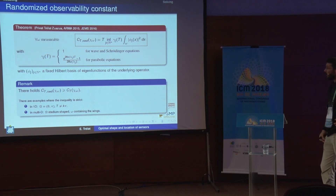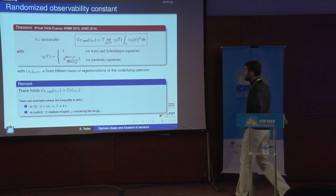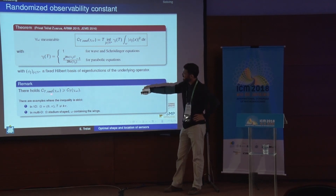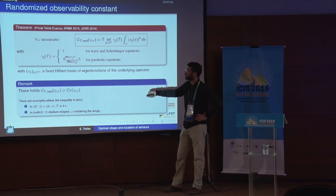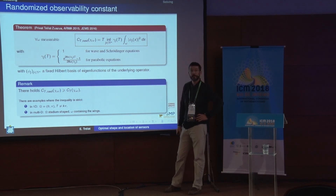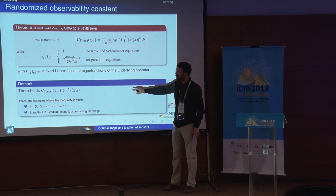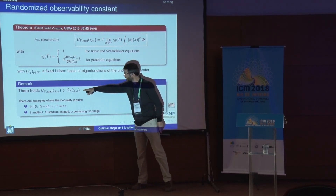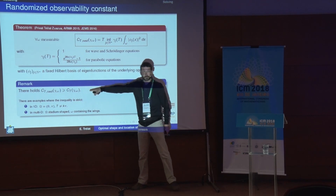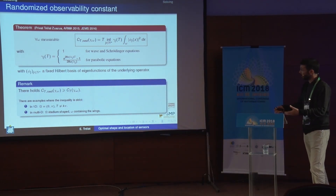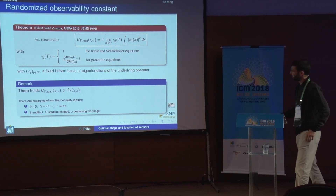By definition, the randomized observability constant is greater than or equal to the deterministic observability constant — it is less pessimistic. In general, this inequality is strict, which is actually a consequence of quantum chaos, but I will come to that point later.